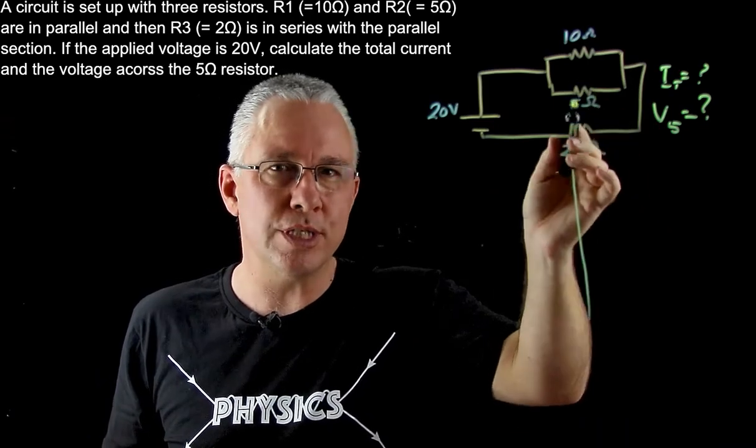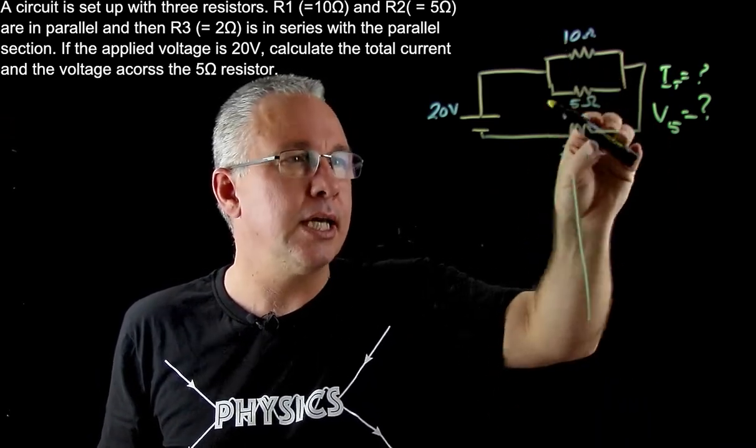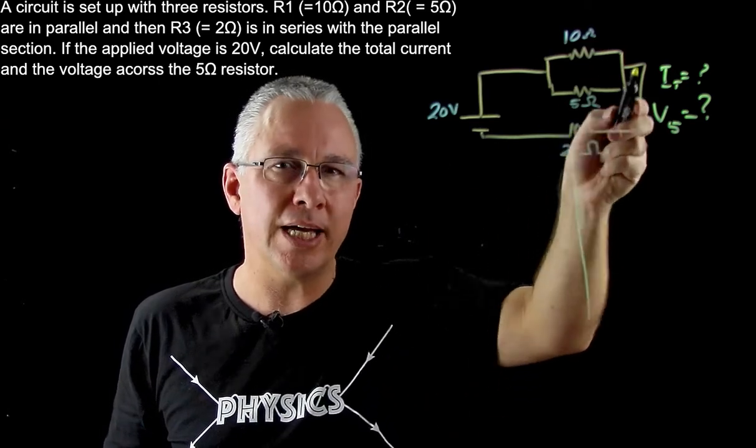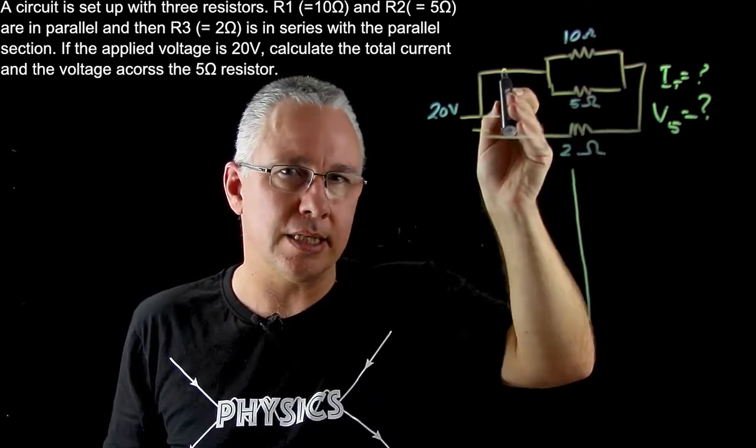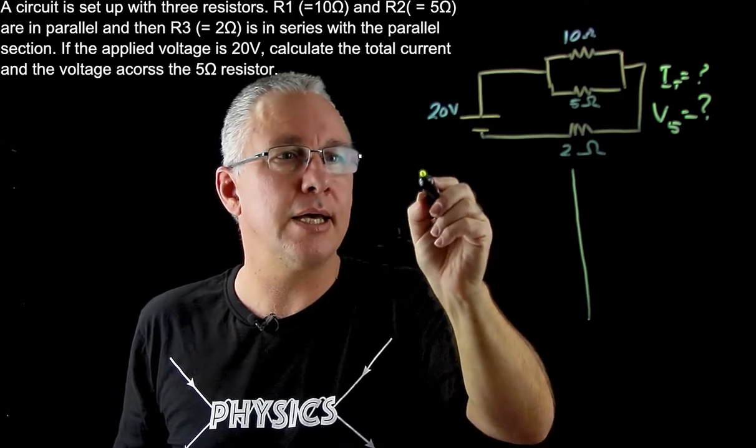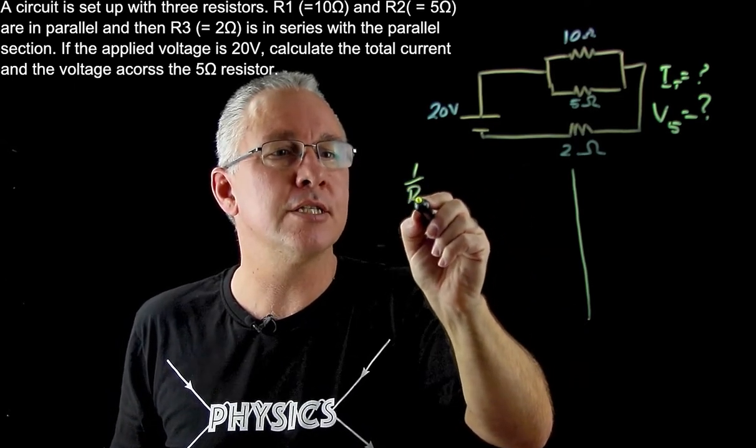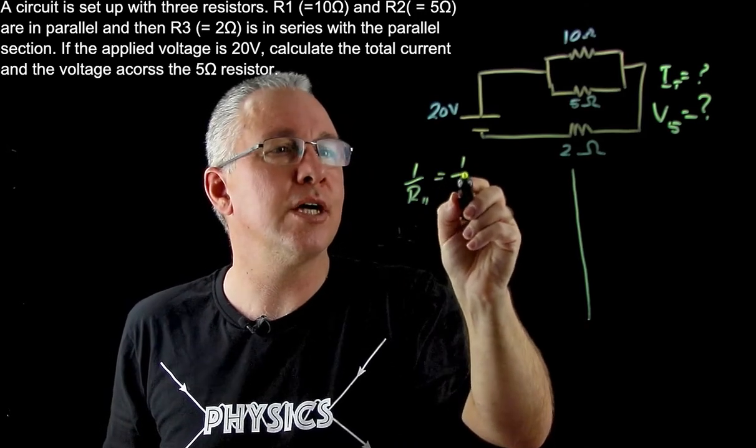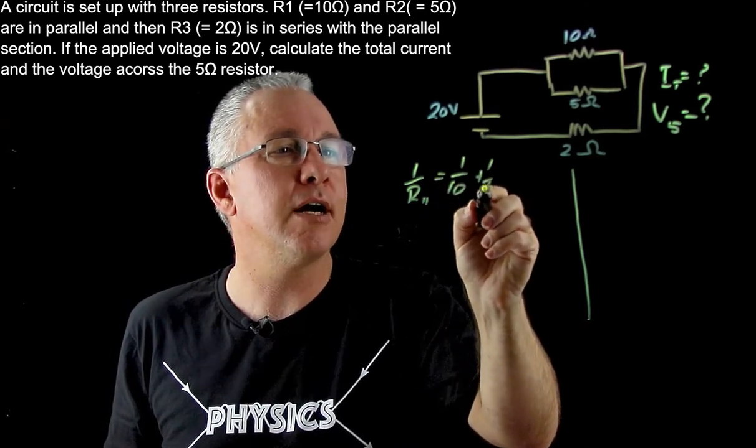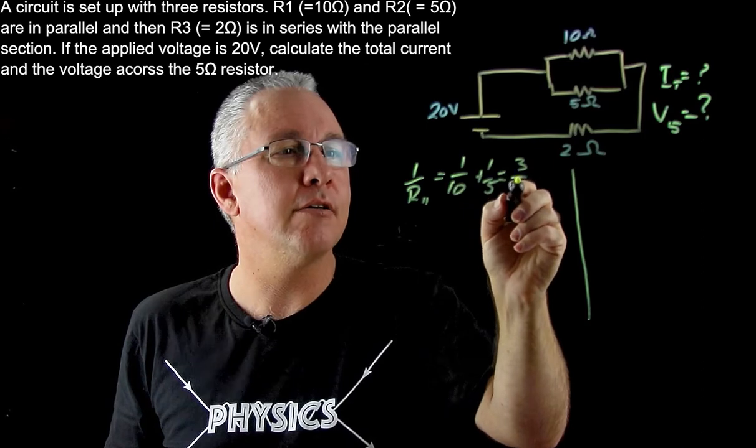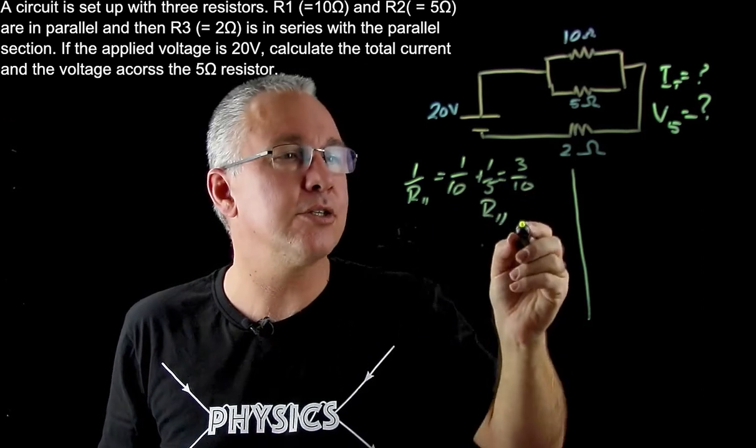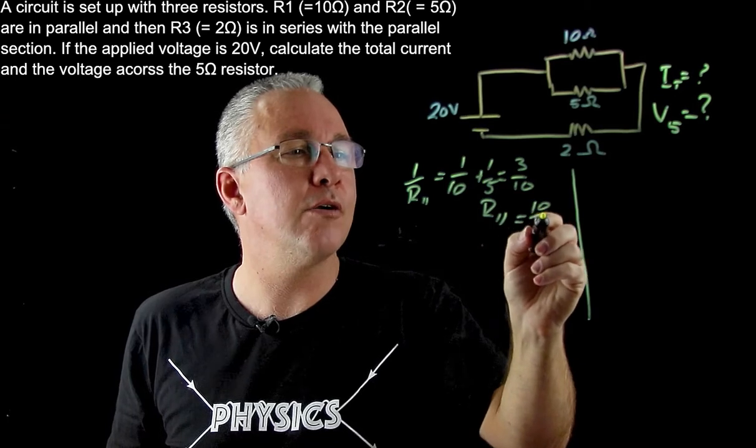Well, we have two sections here - our parallel section and the 2 ohms which is in series. So if we work out the parallel section as a single resistor, we say 1 over that resistance equals 1 over 10 plus 1 over 5, and that gives me 3 over 10. So my resistance for the parallel section is 10 over 3.